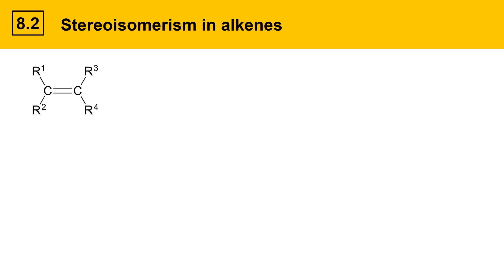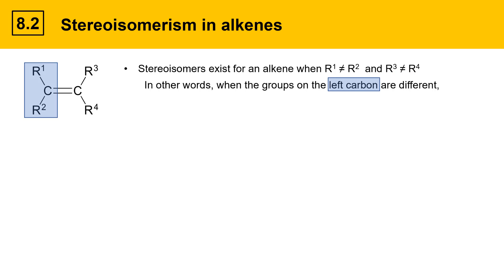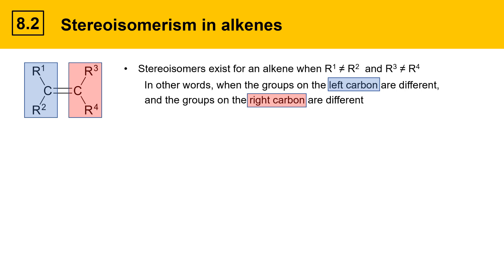This slide delves into stereoisomerism more deeply. For an alkene with groups labeled R1, R2, R3, and R4, stereoisomers exist when R1 does not equal R2 and R3 does not equal R4 — in other words, when the groups on each carbon of the double bond are different from each other. In the example from the previous slide, the left carbon has a methyl group and a hydrogen, which are different, and the right carbon also has a methyl group and a hydrogen, which are different. Therefore a stereoisomer exists for this molecule.